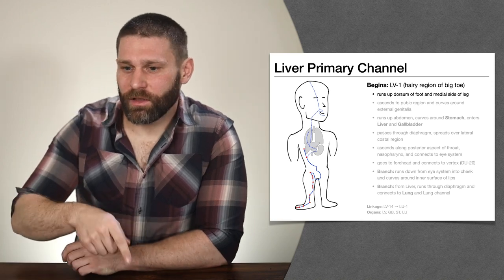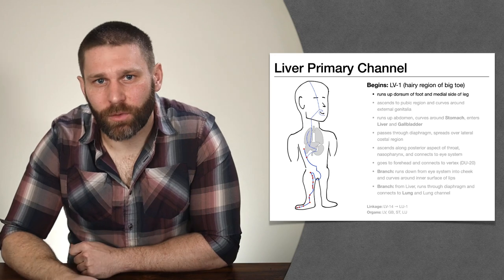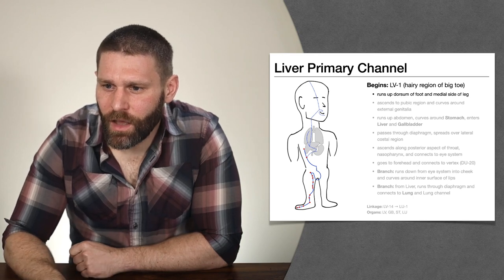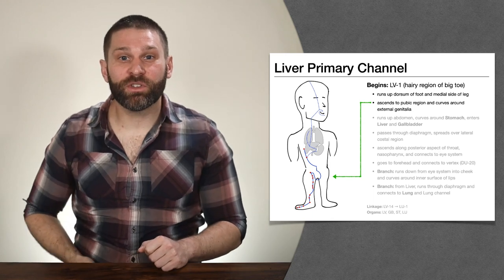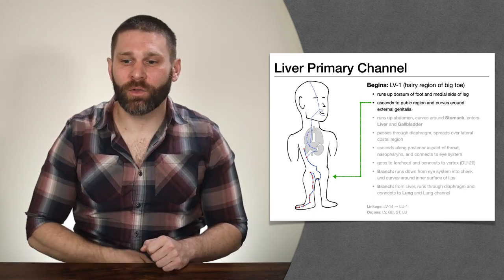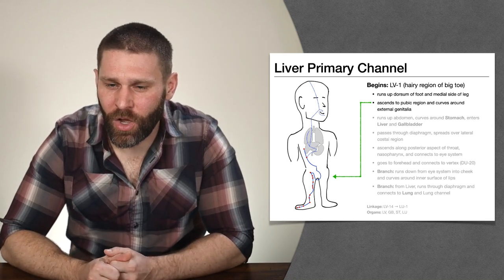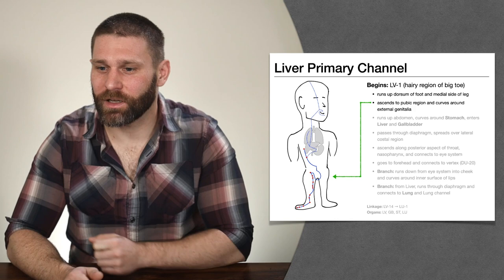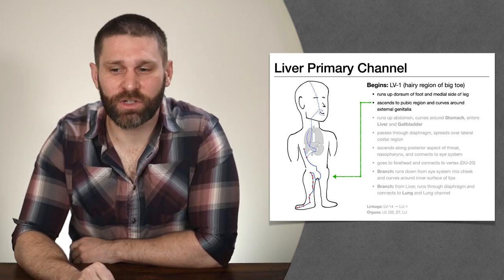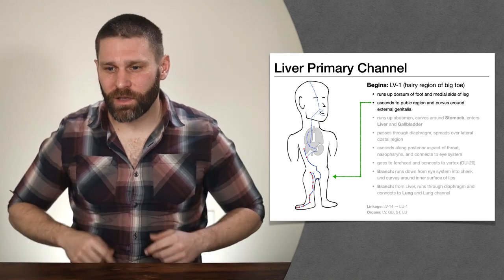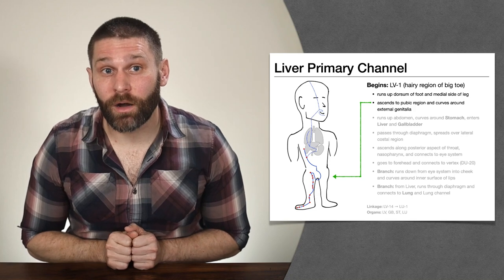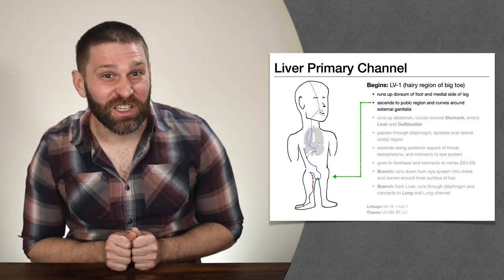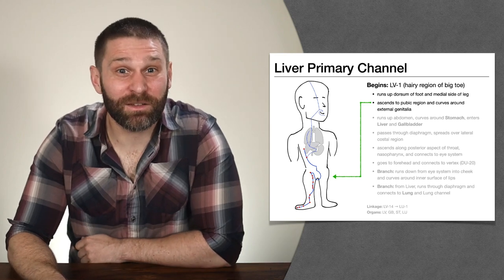The liver channel goes up the top of the foot and then up the inside of the leg — Liver 1, 2, 3, 4 on the top of the foot, then the medial aspect of the leg with Liver 5, 6, 7, 8, 9. Then something interesting happens: the liver channel goes to the inguinal crease, and then it winds around the external genitalia. We say the liver channel skirts the genitals. This is going to be really important because when we go through our functions and indications, we're going to see a lot of benefiting the genitals — treating itchiness, swelling, and things of the external genitals.